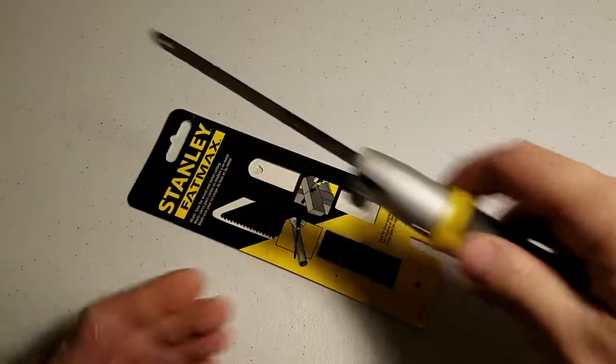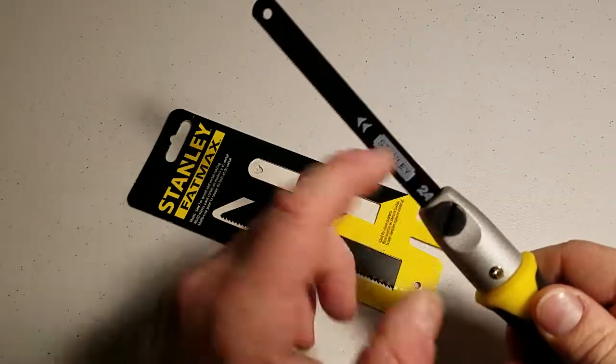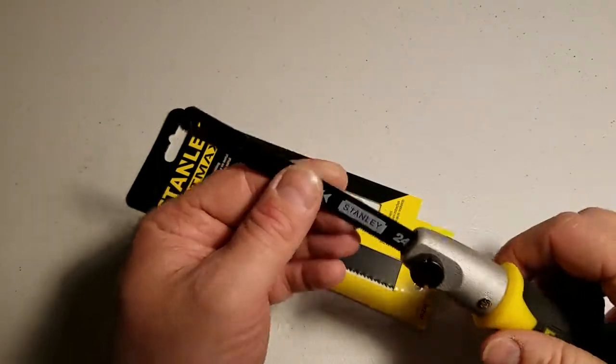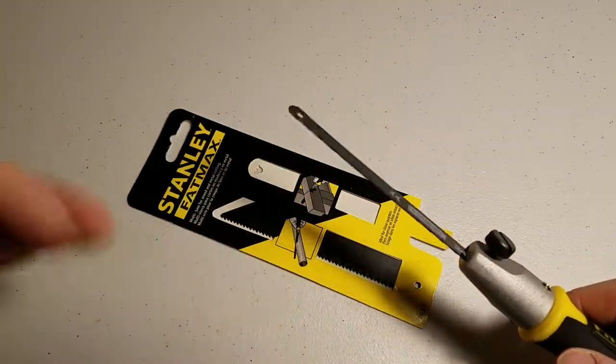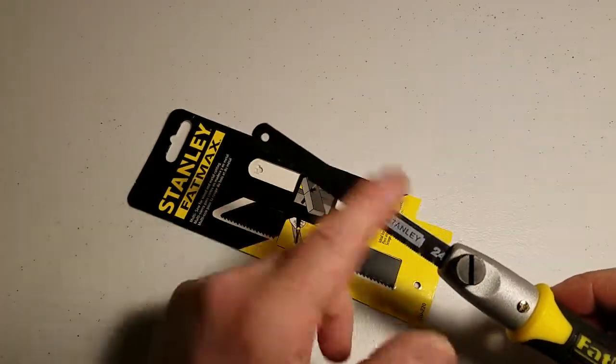It's in there snug. And now I can saw and cut things. This is for steel, obviously. I could go through wood, but I would need bigger teeth for the wood for better speed and whatnot.